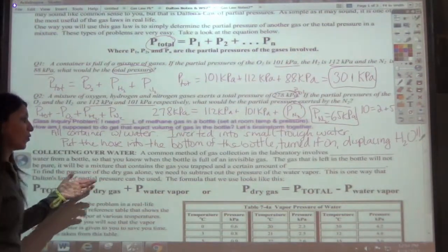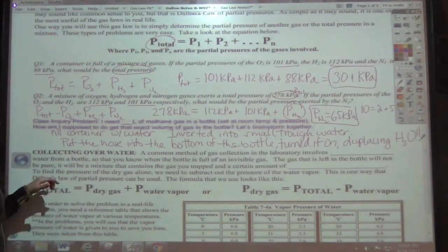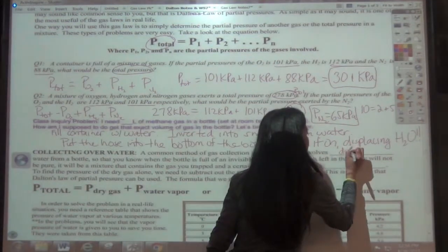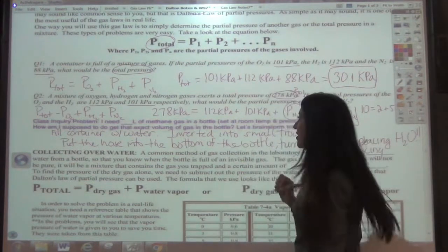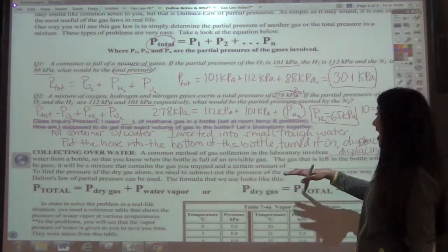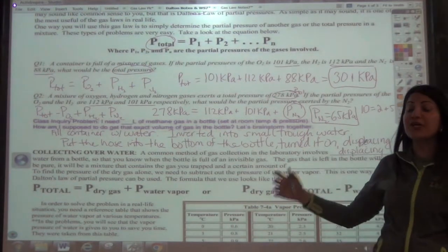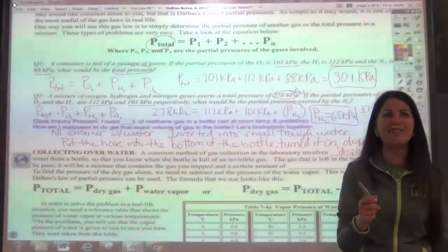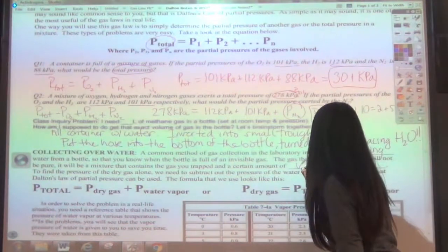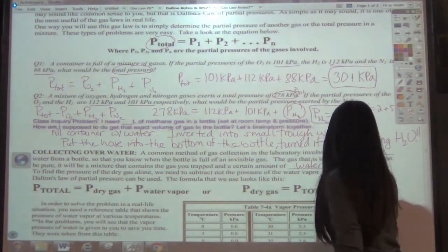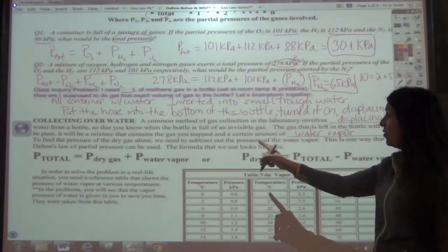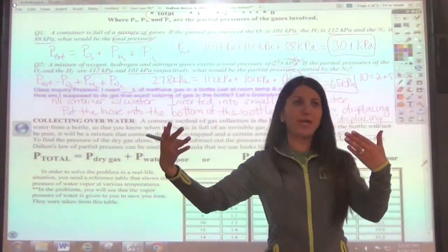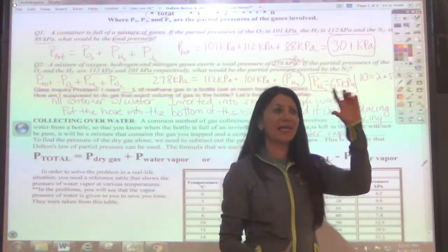Okay. So this method is called collecting over water. This is a common method of gas collection in the lab. Involves doing what to the water? What did we say we wanted to do to the water? Displace it. Displacing water from a bottle so that you know when the bottle is full of an invisible gas. The gas that's left in the bottle will not be pure. We said that it wasn't pure. It's actually a mixture that contains the gas you trapped and what else does it have inside of there? Water vapor. Awesome. It also contains a certain amount of water vapor. To find the pressure of the dry gas alone, what we're going to do is we're going to subtract out the water vapor pressure. Okay. Because what we know is the total, which is the room pressure, has to be equal to both of those pressures added up together. So if you just want the pressure of the gas, you can just subtract the water vapor pressure.